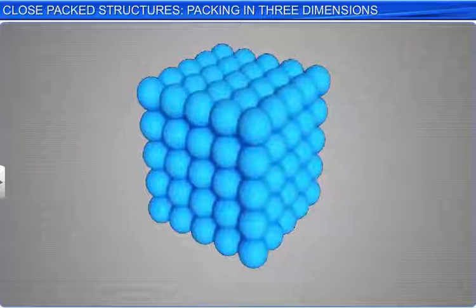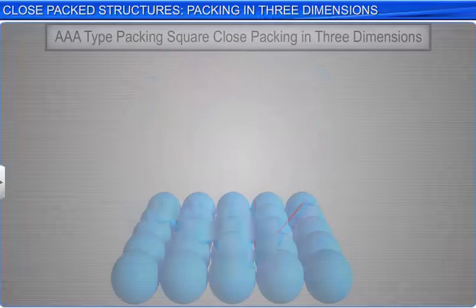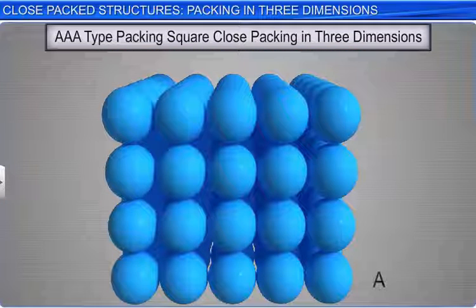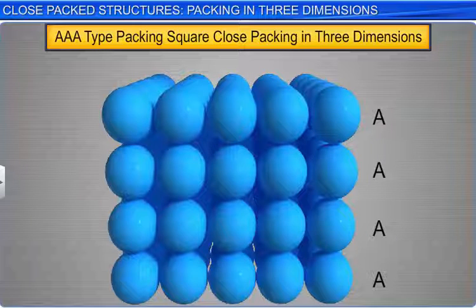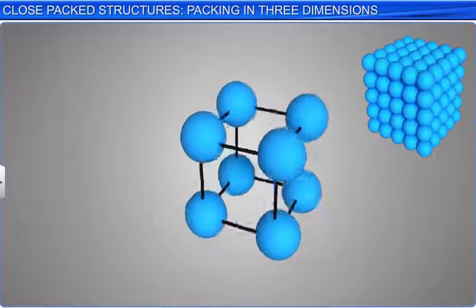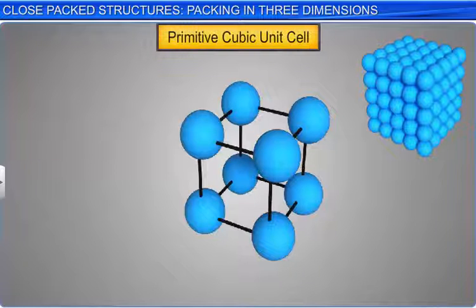The spheres are aligned horizontally as well as vertically. If the arrangement of spheres in the first layer is considered to be of A type, then the arrangement of spheres in the subsequent layers is also of A type. This three-dimensional arrangement is referred to as A-A-A type packing, which results in the formation of a simple cubic lattice. The unit cell of this lattice is a primitive cubic unit cell.